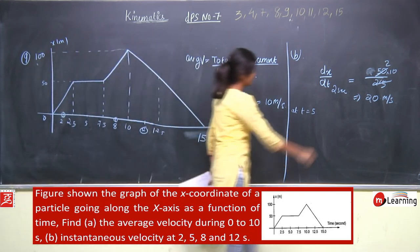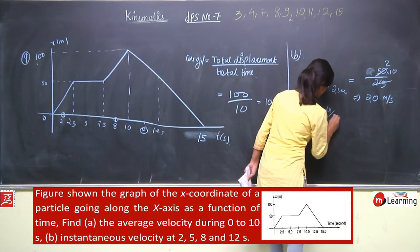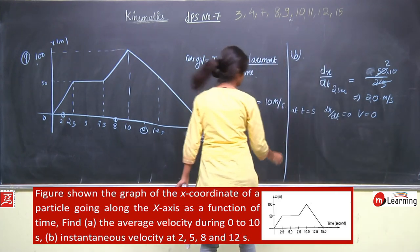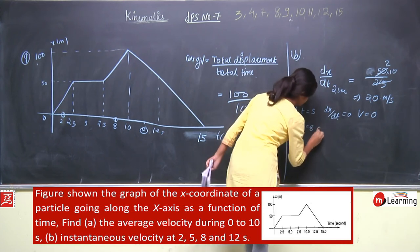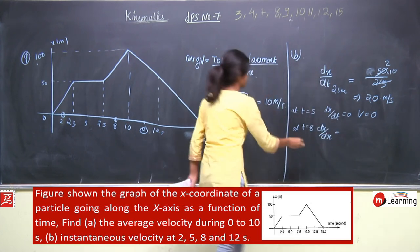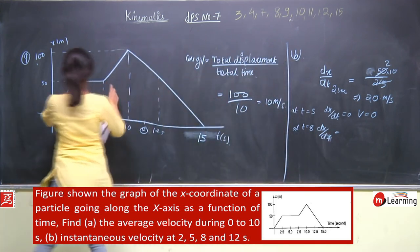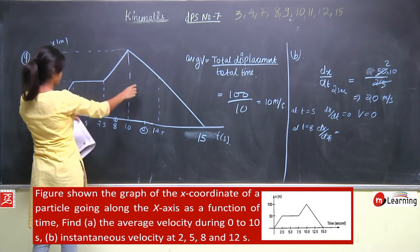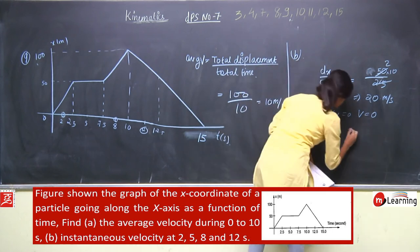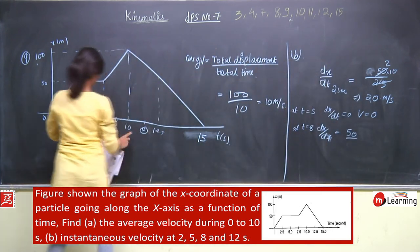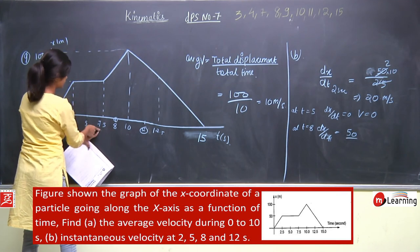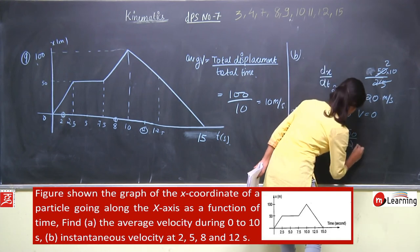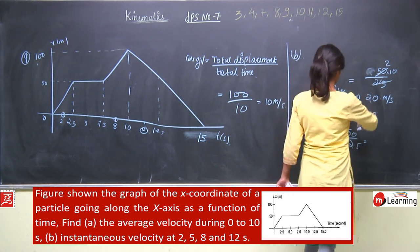At t = 5: dx/dt = 0, so velocity = 0. At t = 8: dx/dt कितना है? dx = x final minus x initial = 100 minus 50 = 50. And dt = 10 minus 7.5 = 2.5. So dx/dt = 50/2.5 = 20 meter per second.